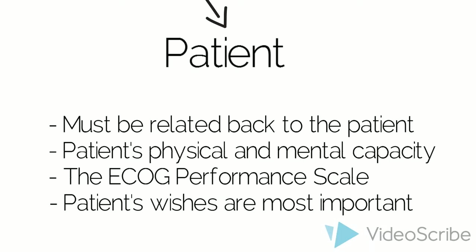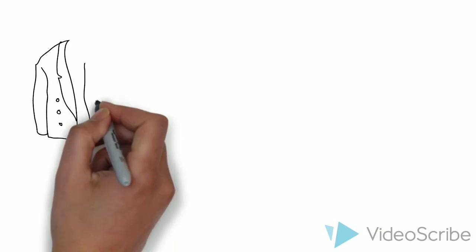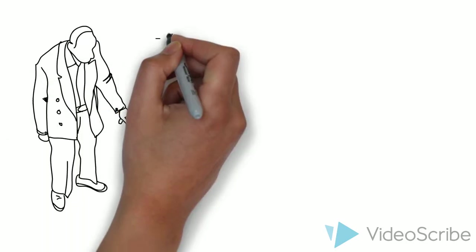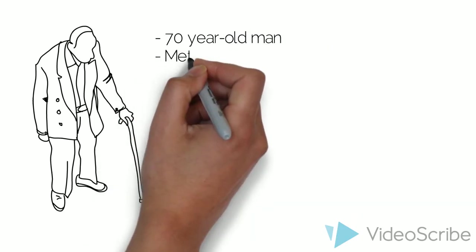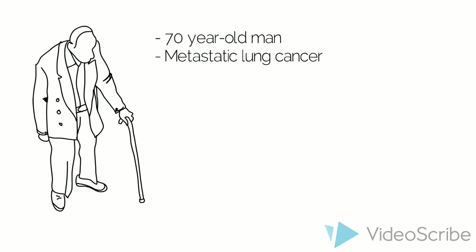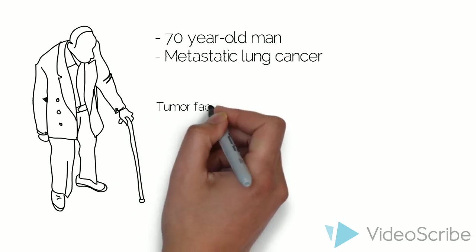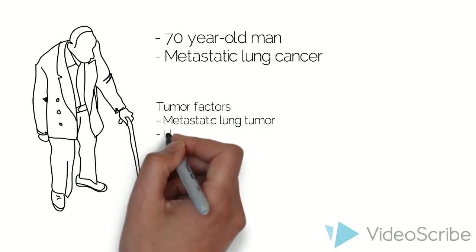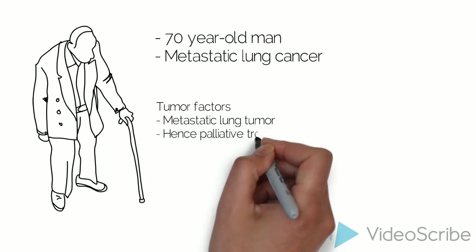Let's put this together with a real example. If a 70-year-old patient with metastatic lung cancer was seeing you about their treatment, you may consider the following factors when coming to a treatment decision. First of all, you would evaluate their tumor. If this tumor was a metastatic lung cancer, this would determine that all treatments would be palliative in nature.